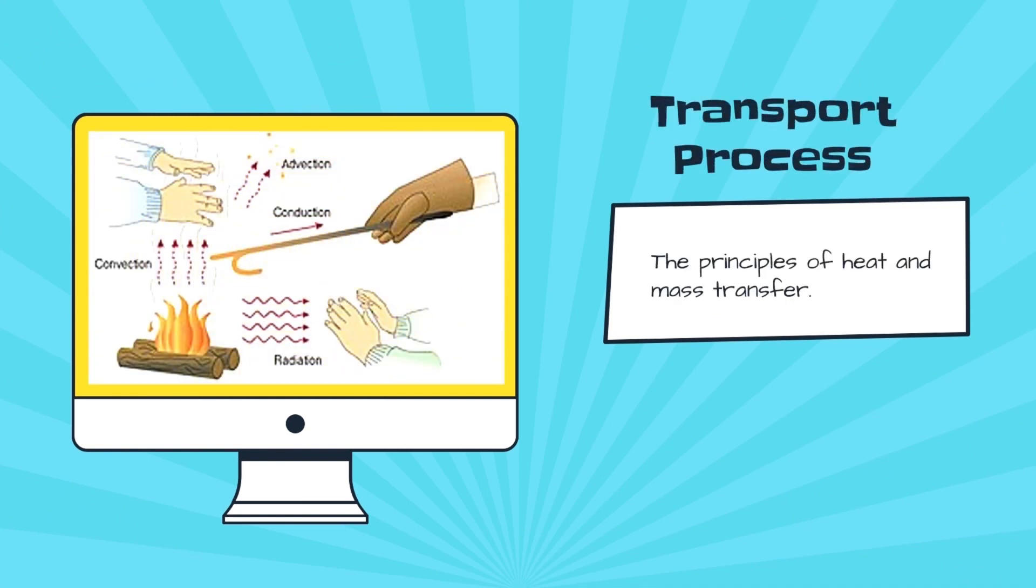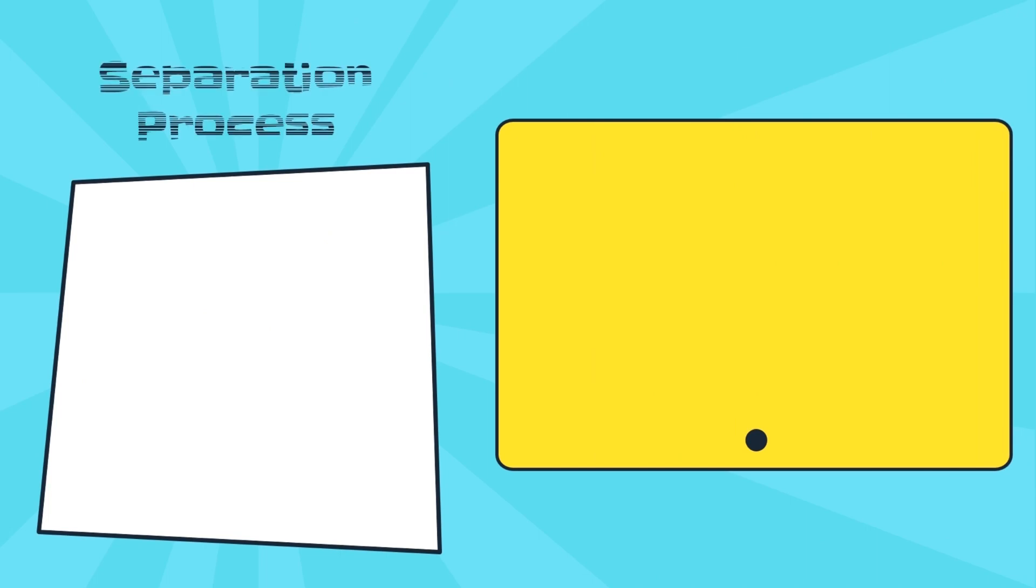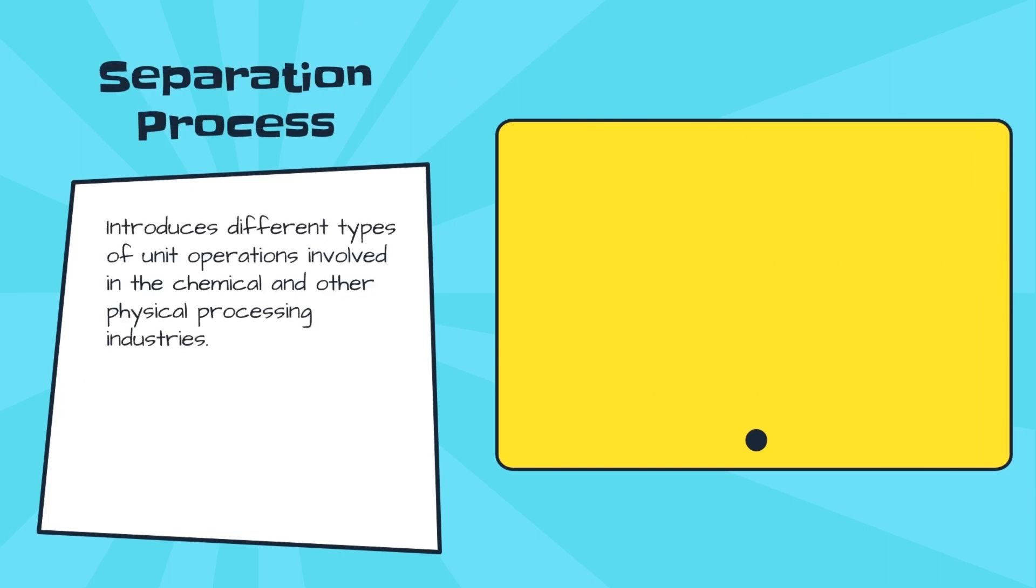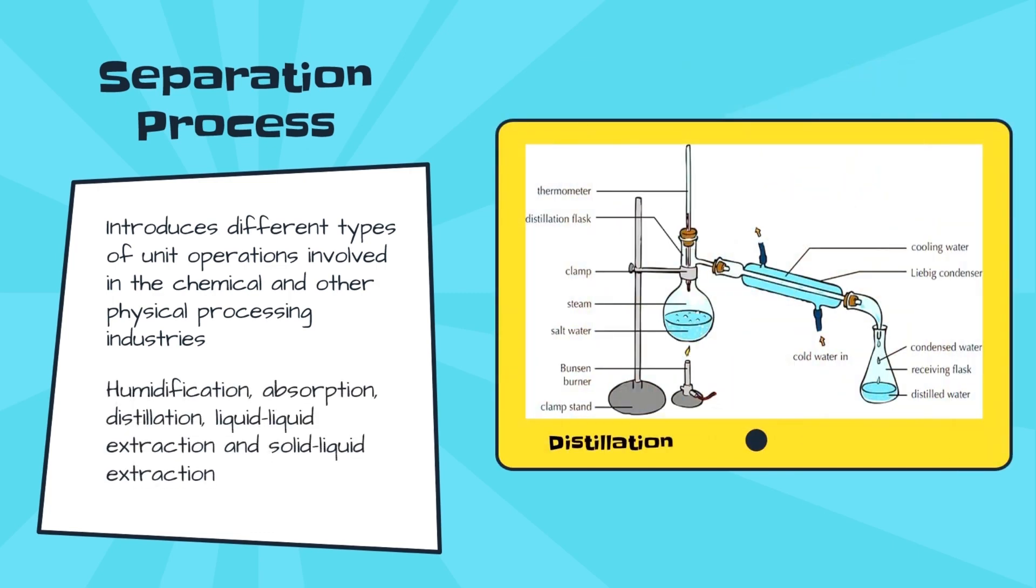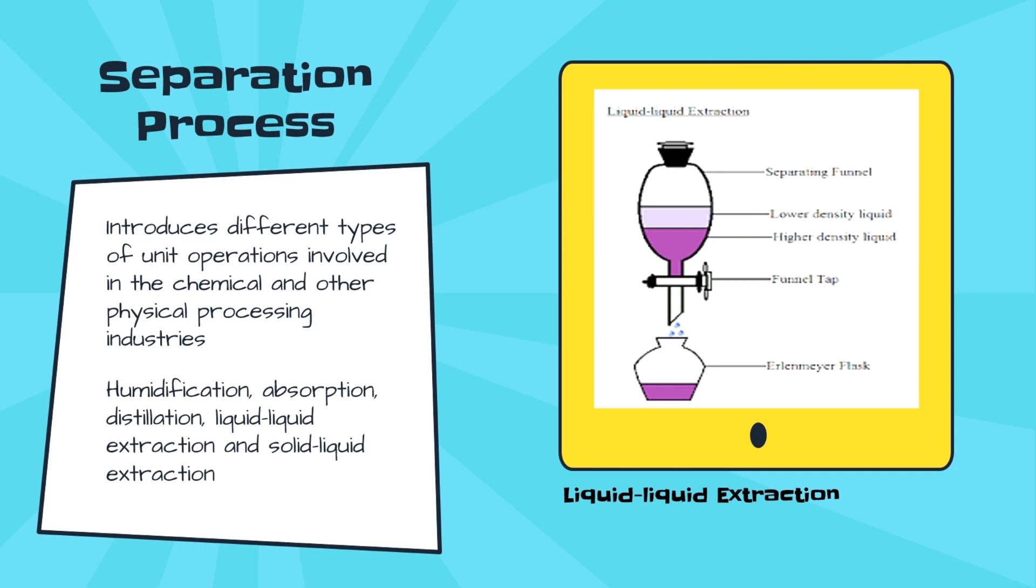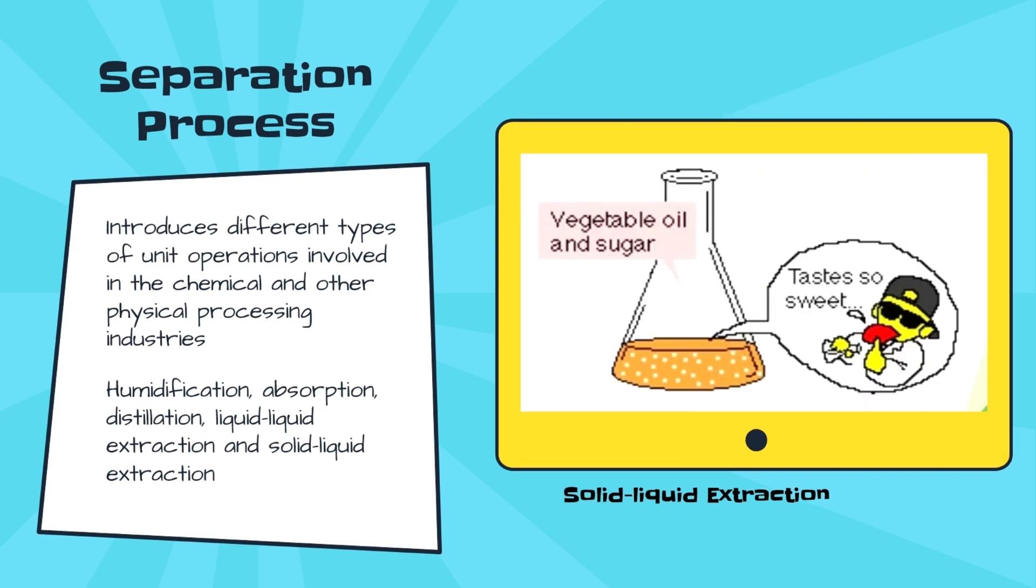For transport process, we have learned about the principles of heat and mass transfer. In addition, separation process introduces different types of unit operations involved in the chemical and other physical processing industries, such as humidification, absorption, distillation, liquid-liquid extraction, and solid-liquid extraction.